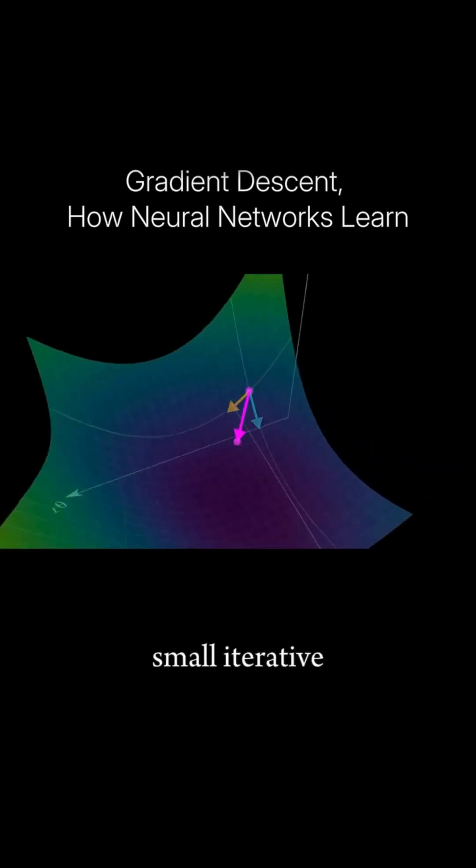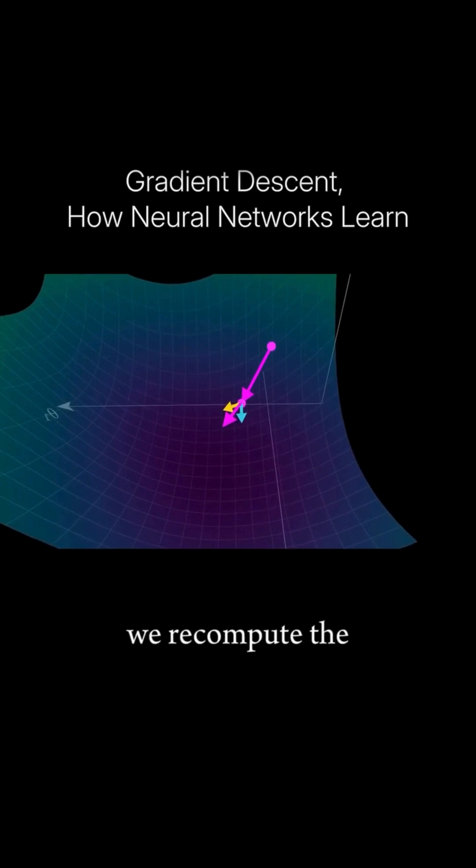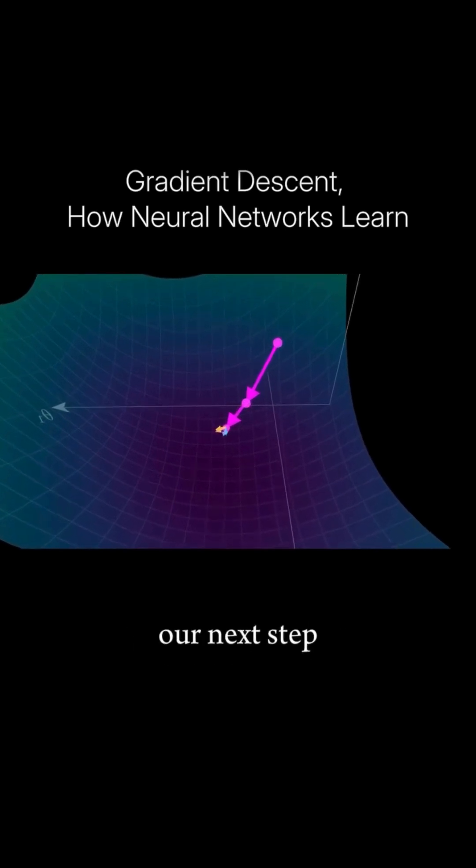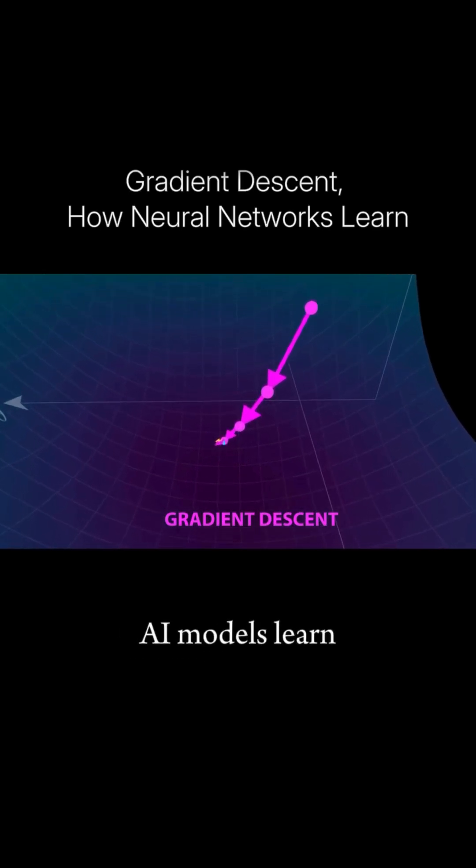The idea now is to take small iterative steps downhill, where after each step we recompute the gradient to guide our next step. This is known as gradient descent, and is how virtually all modern AI models learn.